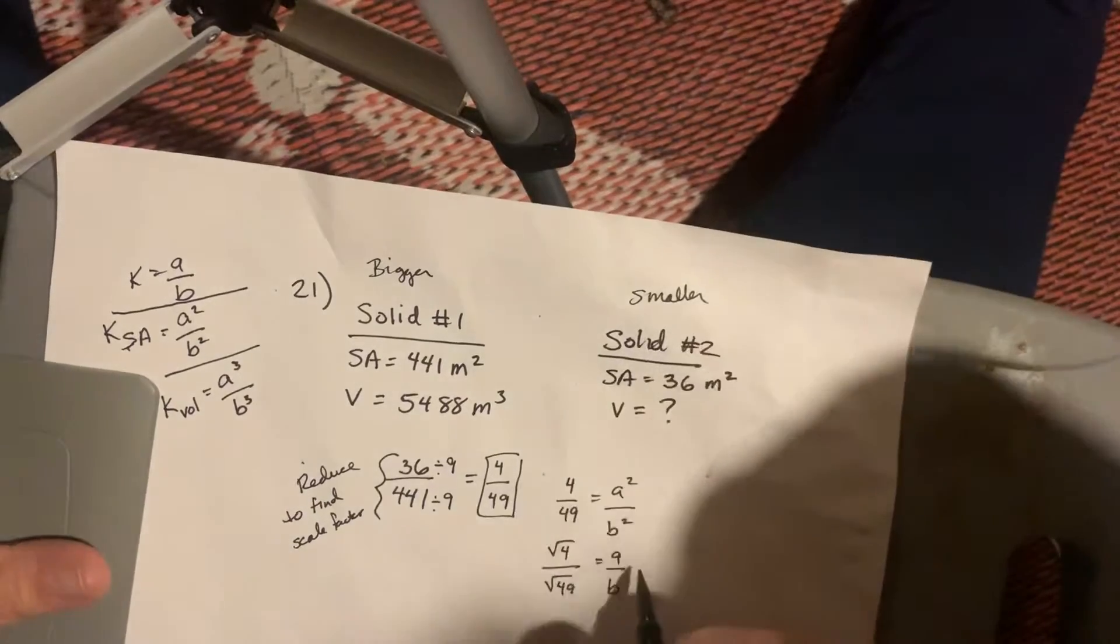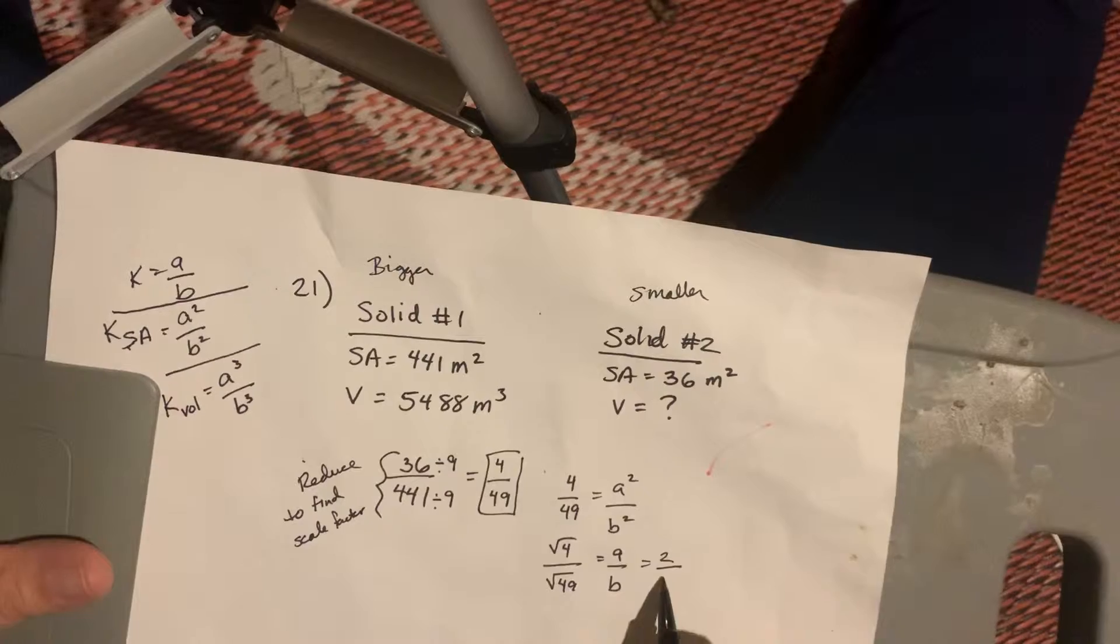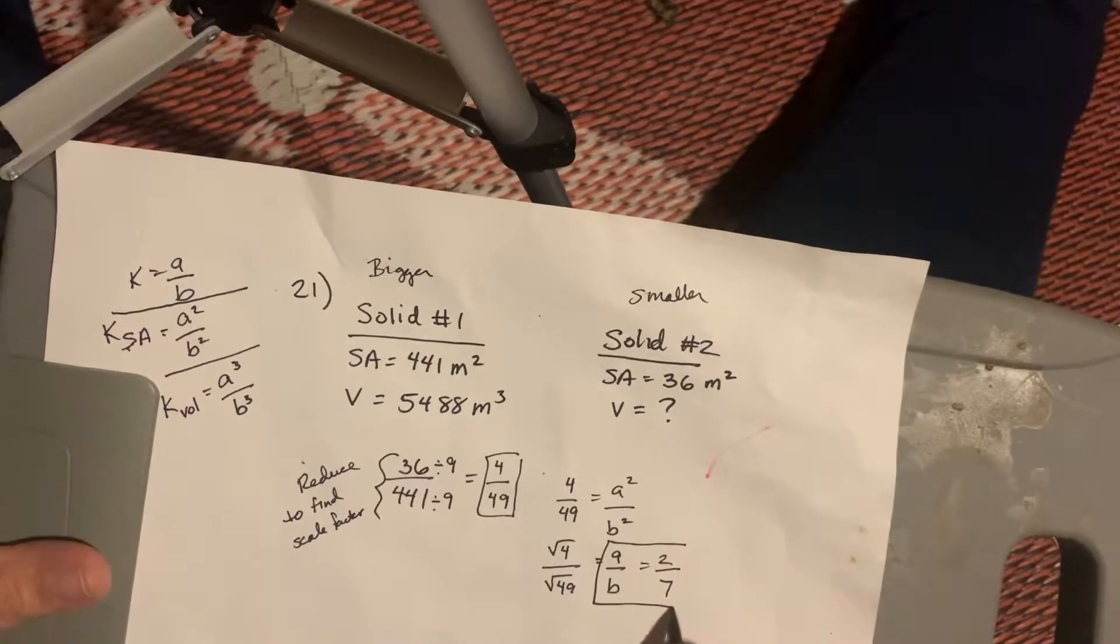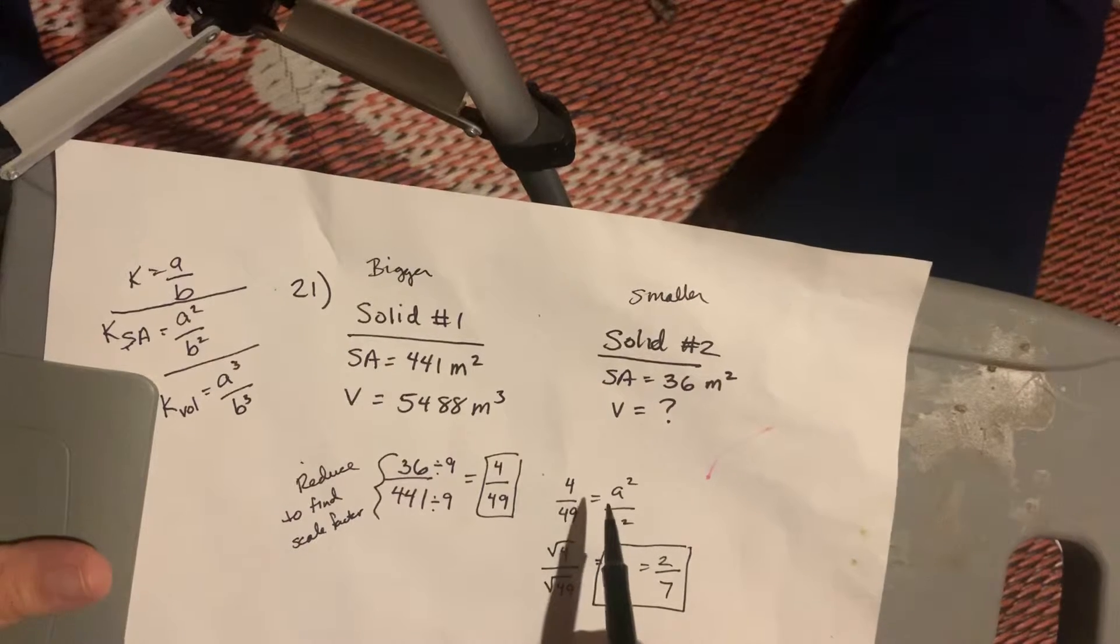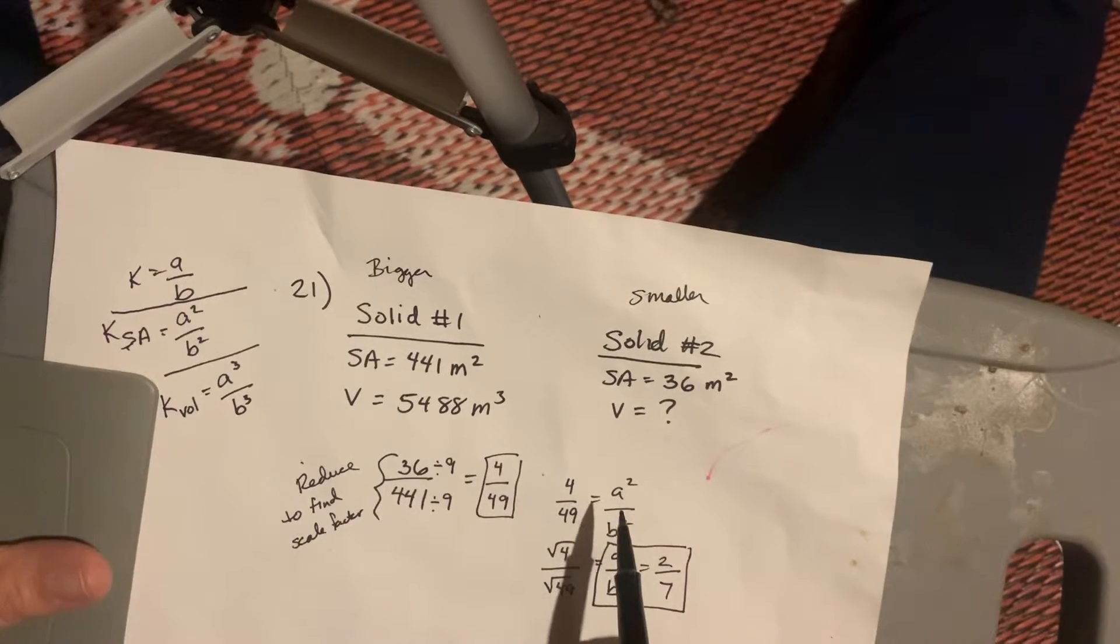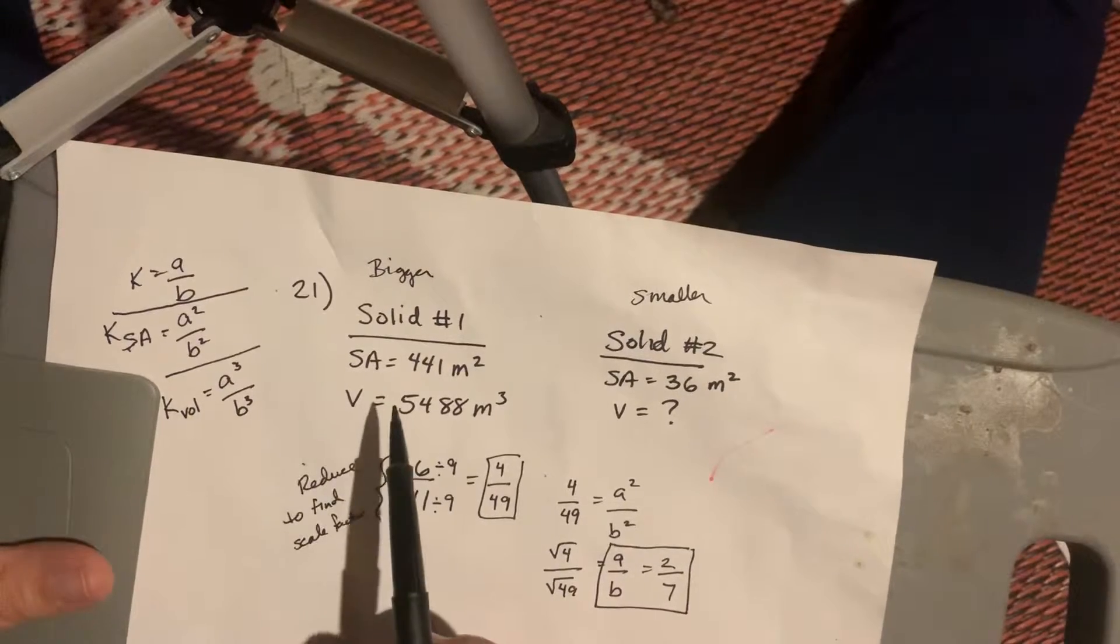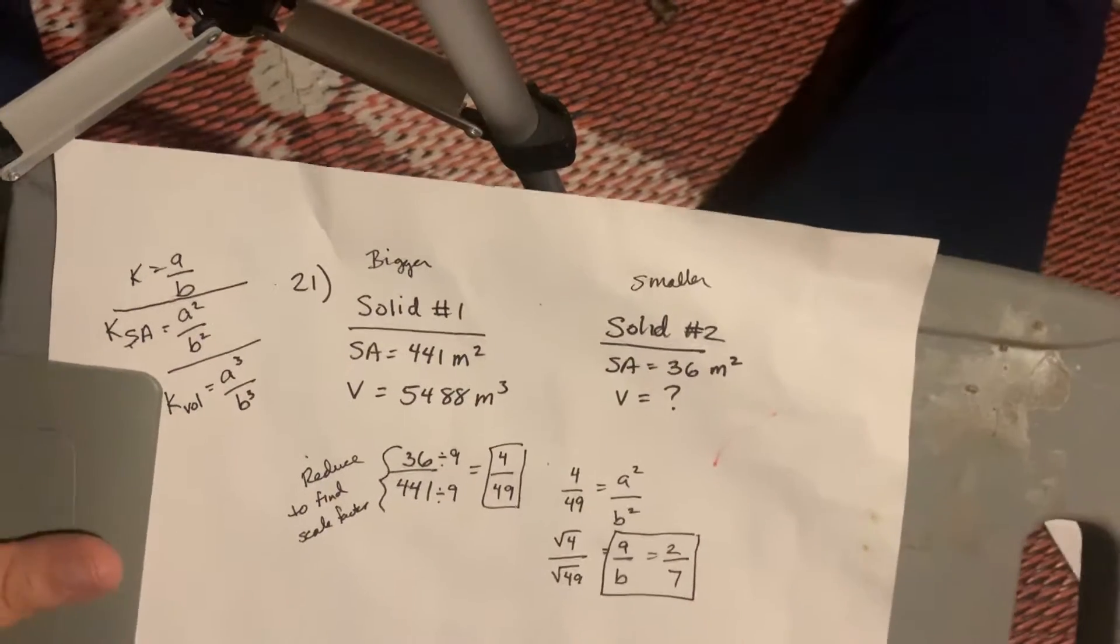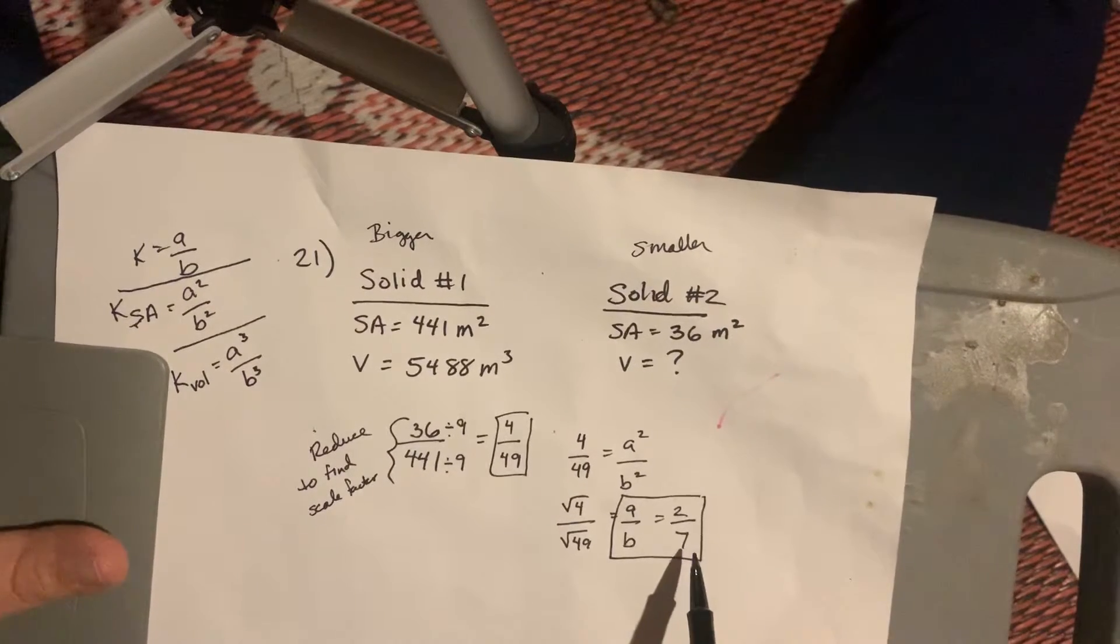Square root of 4 is 2. And, the square root of 49 is 7. So, my scale factor is 2 over 7. I can square that again to get the scale factor for surface area. But, I really need the volume scale factor because I have one volume and I need to find the other volume. So, now that I know the scale factor is 2 over 7...